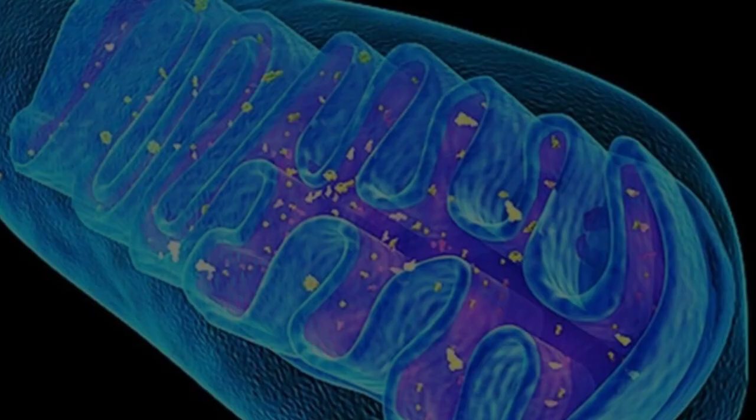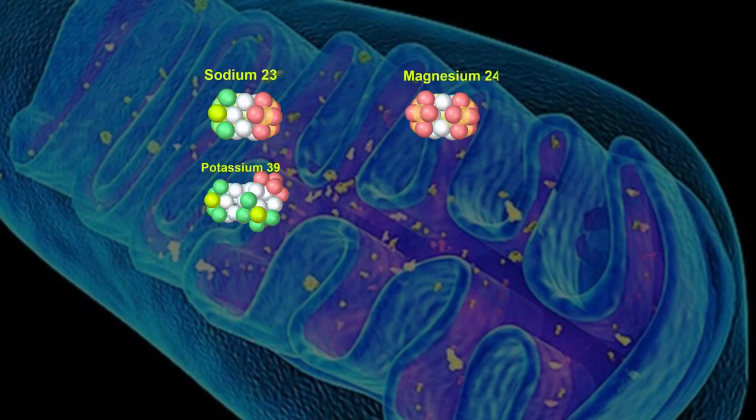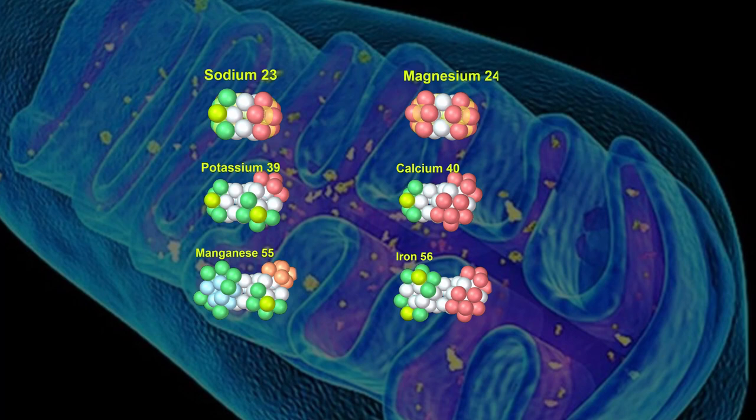When we examine the mitochondria we find the following ions present: Sodium, magnesium, potassium, calcium, manganese, and iron. These are the same elements that were found by Kvran and others to be involved in biological transmutation of elements.